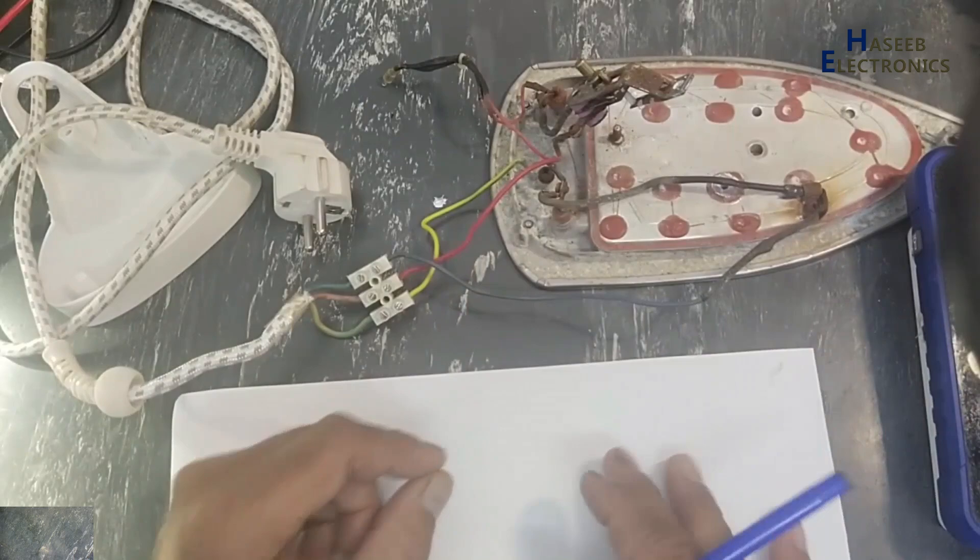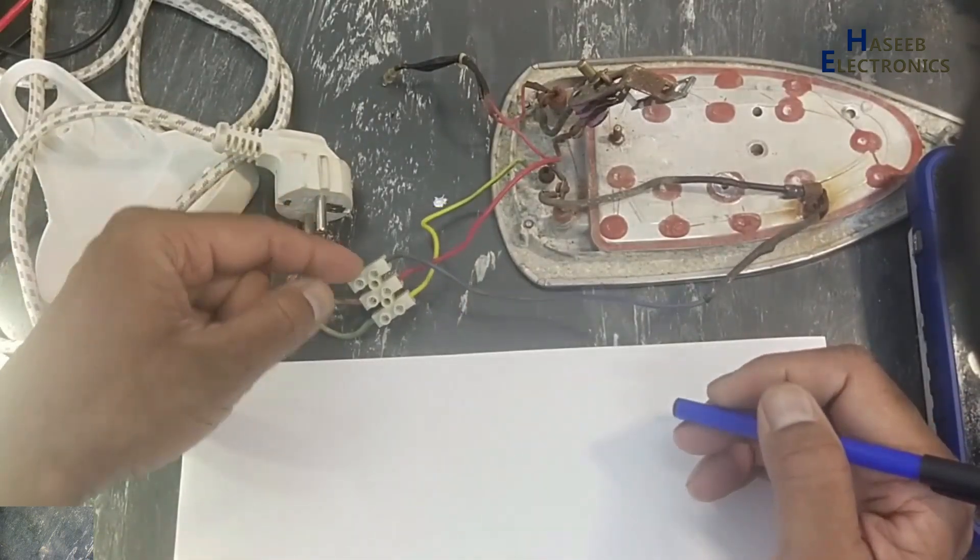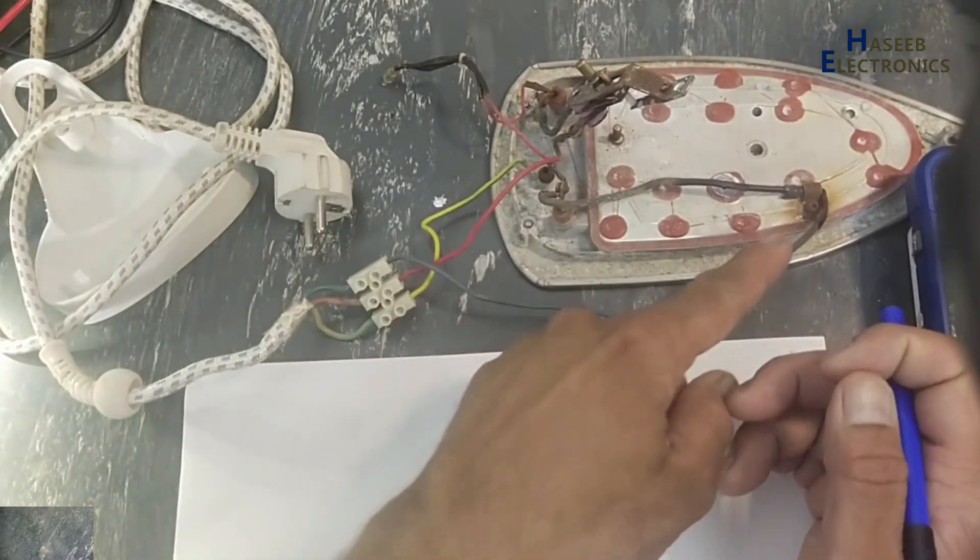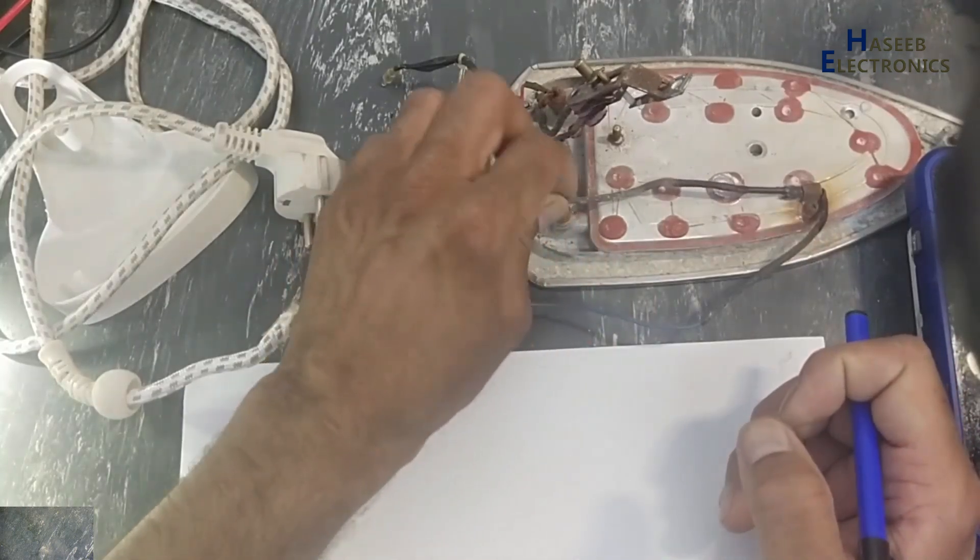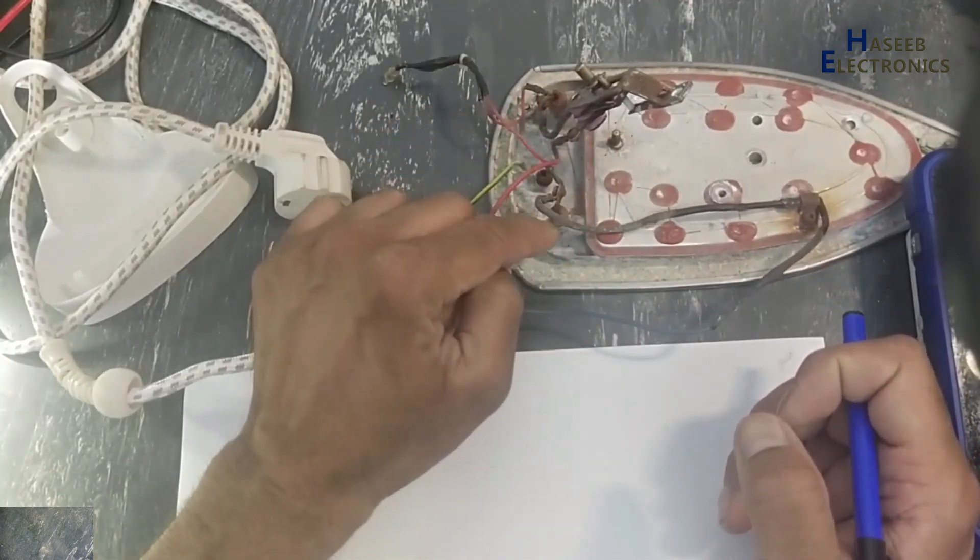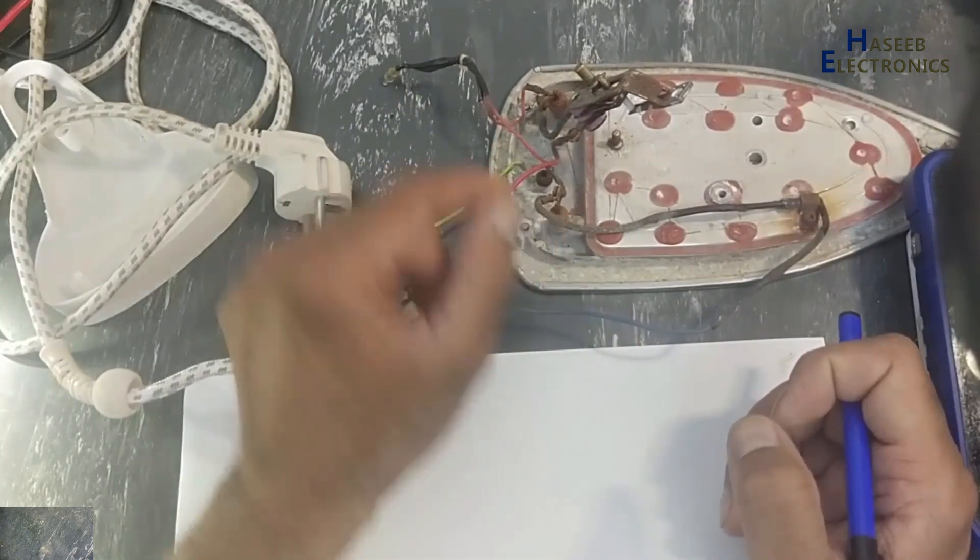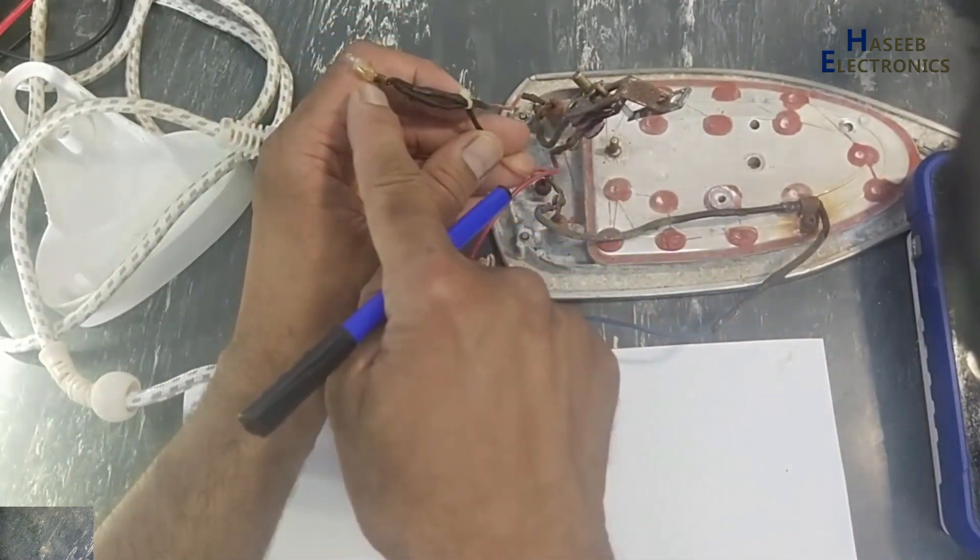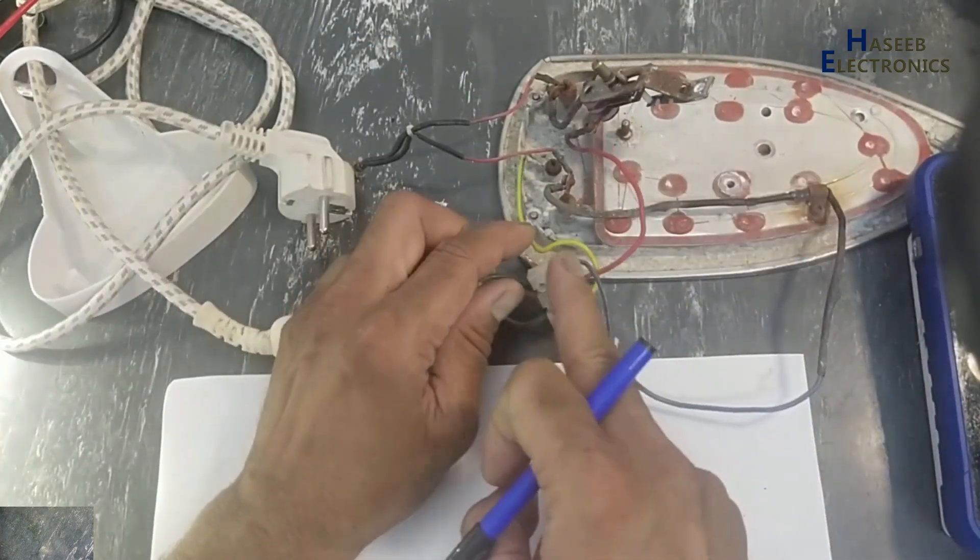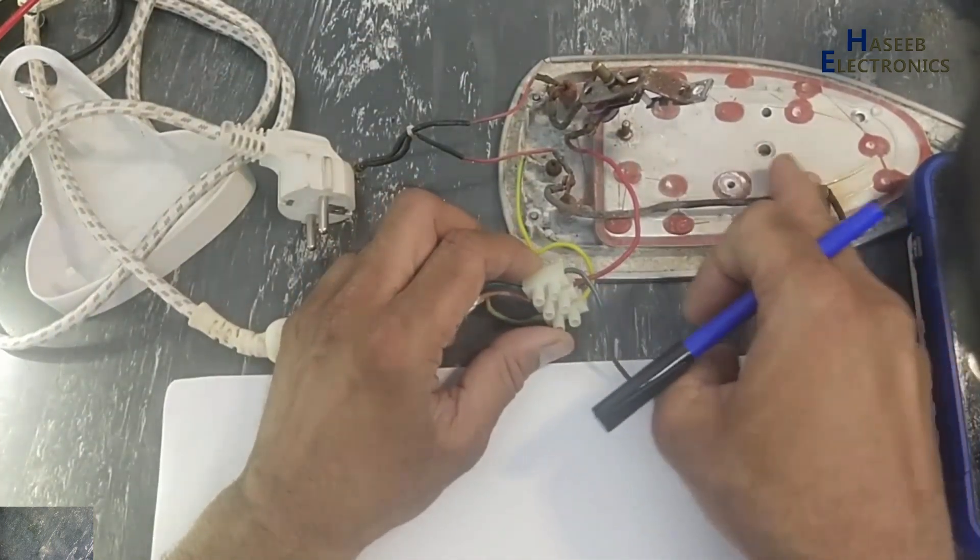We will make a small diagram. The blue wire is neutral. Neutral is reaching to this component - here is the thermal fuse. Then it is reaching to one end of the heating element. The same point is reaching to this neon indicator.